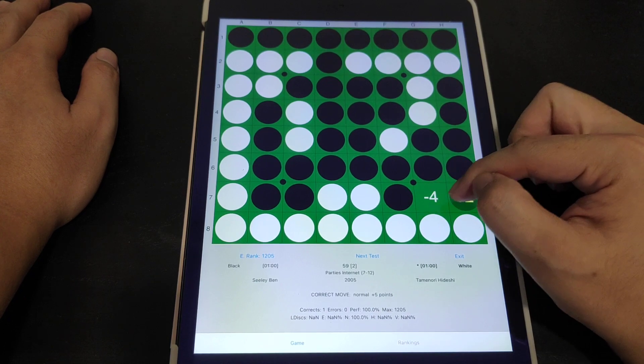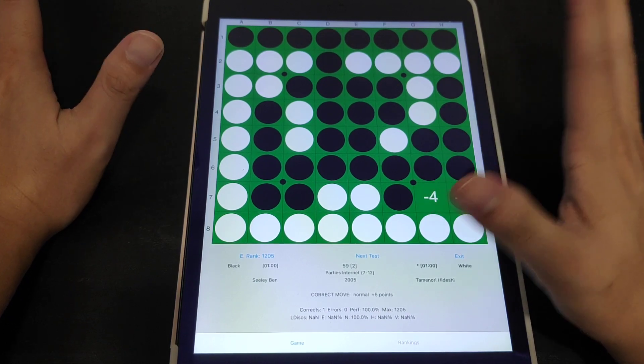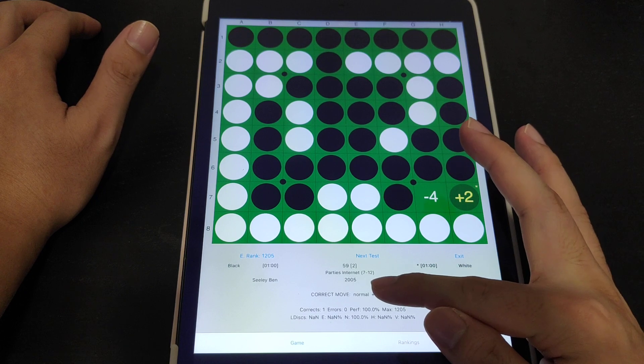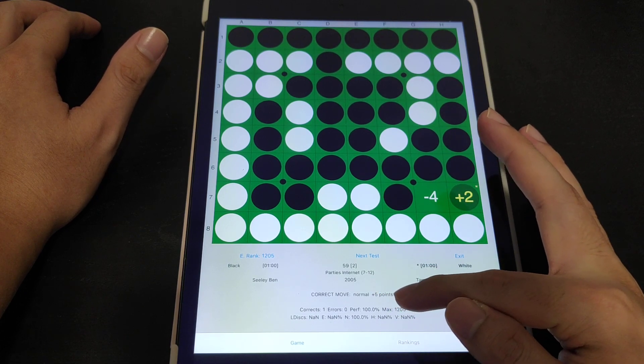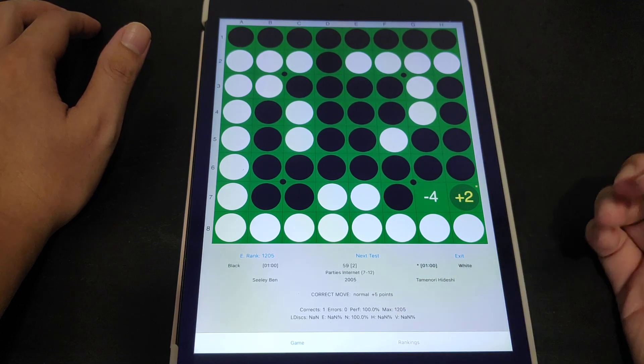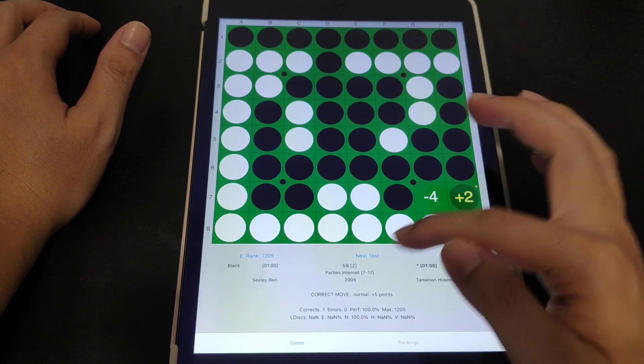They will indicate for you the rating, it's minus 4 and plus 2. Basically I've done the correct move and that's the normal one, plus 5 points. So basically I can keep on going for the next test.